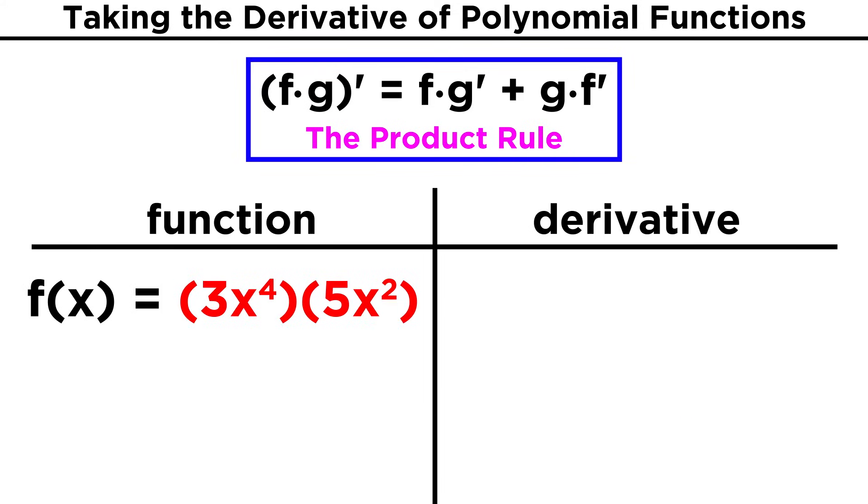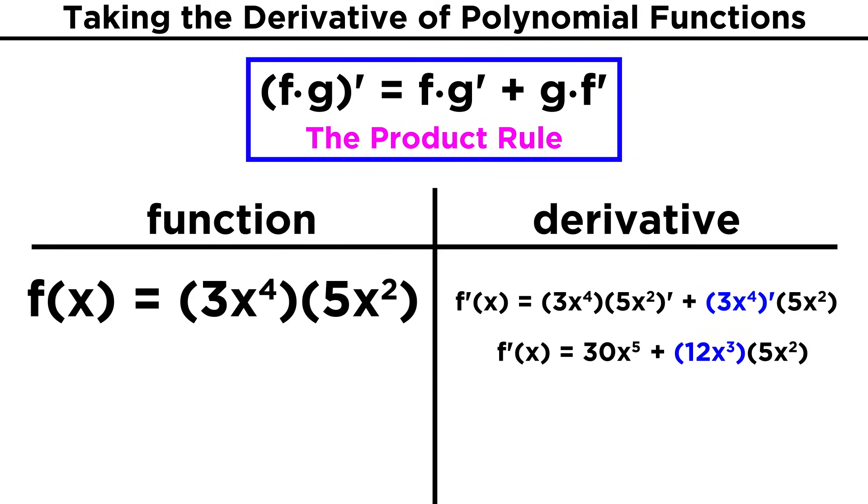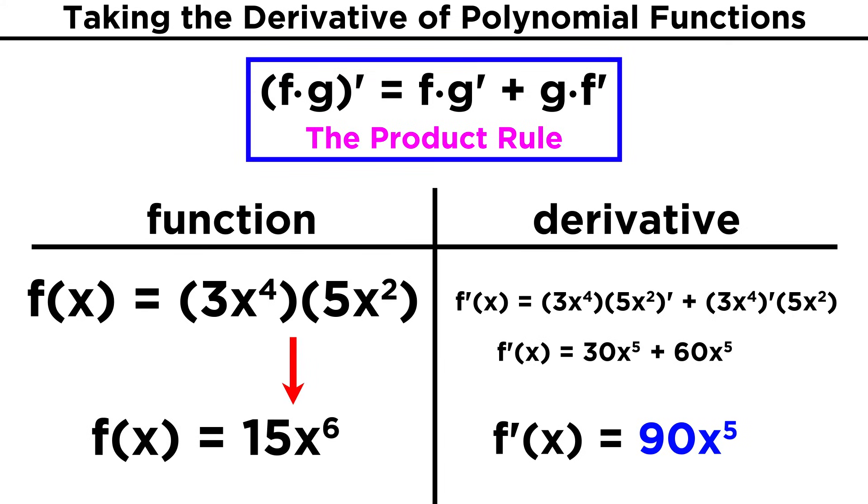Let's try one more. Find the derivative of three x to the fourth times five x squared. We can use precisely the same algorithm every time. So let's leave the first function alone, and take the derivative of the second, to get ten x, which gives a product of thirty x to the fifth. Then we take the derivative of the first to get twelve x cubed, and leave the second function alone, which then multiply to give sixty x to the fifth. Adding them together, we get ninety x to the fifth. Again, this agrees with the answer we would get if we were to multiply the original terms together and use the power rule.